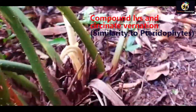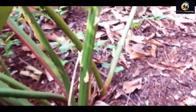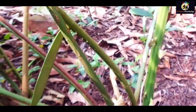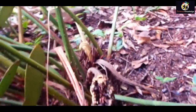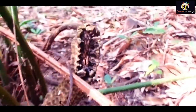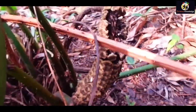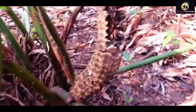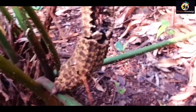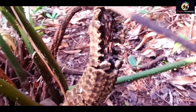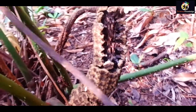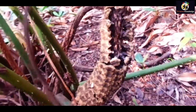So in this way the cycads resemble pteridophytes. The reproductive structures are produced in cones, which are compact in nature. This is the cone — it is a female cone, so this plant is a female plant.